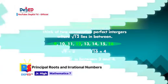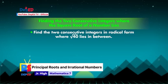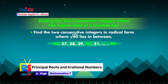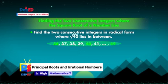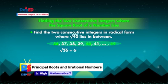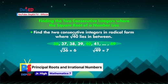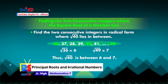Another example: find the two consecutive integers where the square root of 40 lies in between. Again, we will think of two consecutive perfect square integers where 40 is in between them. 40 is between the perfect squares 36 and 49. Take the square roots of these numbers. Since the principal root of square root of 36 is 6, and the principal root of square root of 49 is 7, thus the square root of 40 is between 6 and 7.